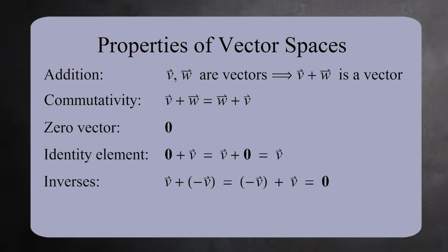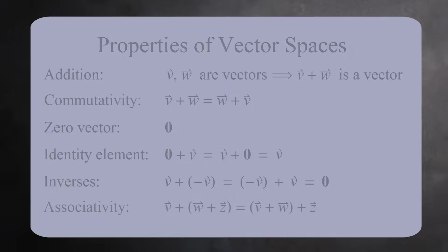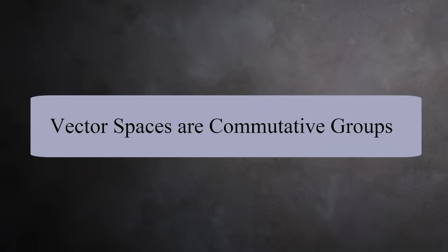Also for each vector, there is another vector which points in the opposite direction. When you add these two together, you get the zero vector. Vector addition is also associative. Taken together, we see that vectors form a commutative group under addition.